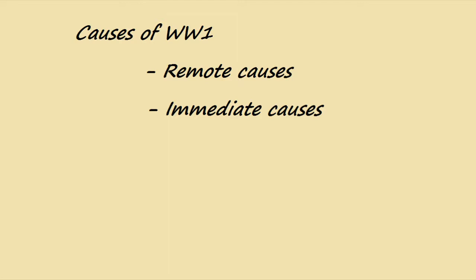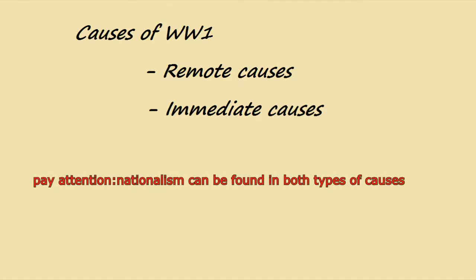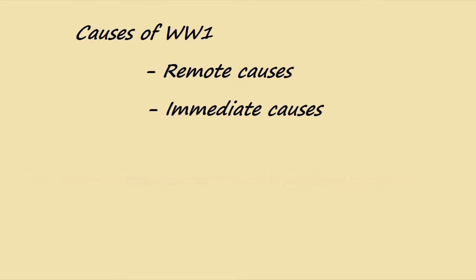When it comes to short-term causes, the moment they appeared it led directly to the war — it's like the spark these empires needed. Generally you will find only one immediate or direct cause, but I prefer to put two. Nationalism can be found in both long-term and short-term causes: the long-term nationalism is the concept, the idea, the feeling; while the short-term nationalism is the result of that idea, because it led to terrorist organizations that we're going to see later.